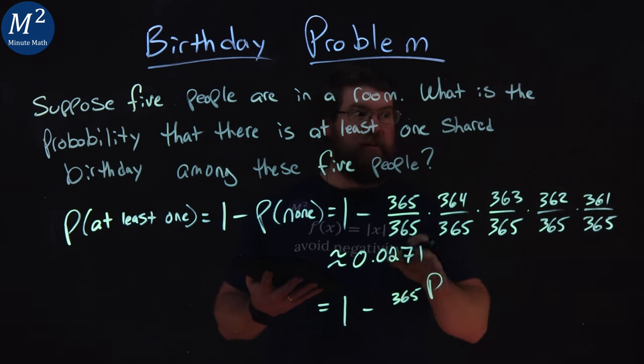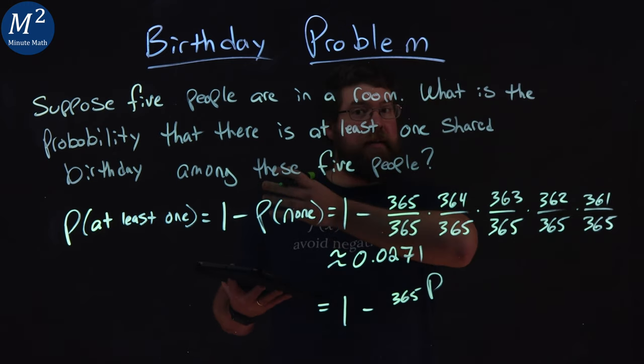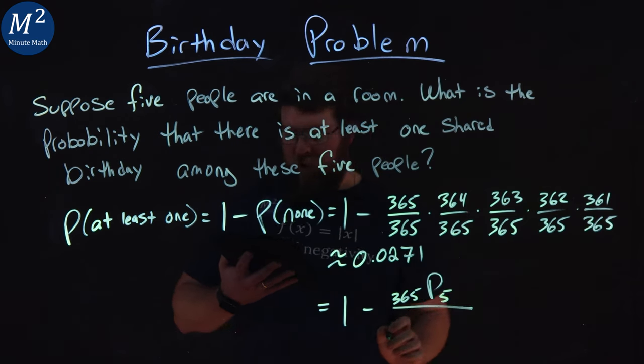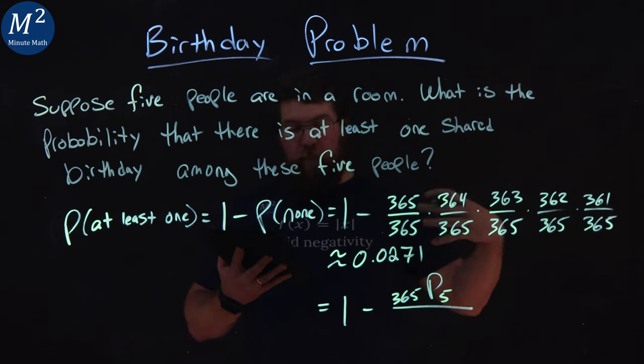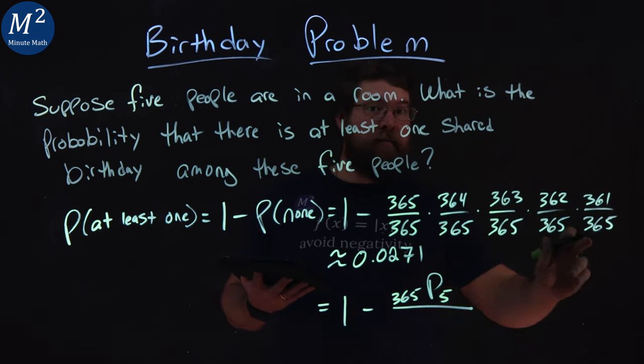And this is a permutation because order matters here. First person picks a day, then we can't choose that one. 365 permutation 5 over the total number of days is 365 times itself five times.